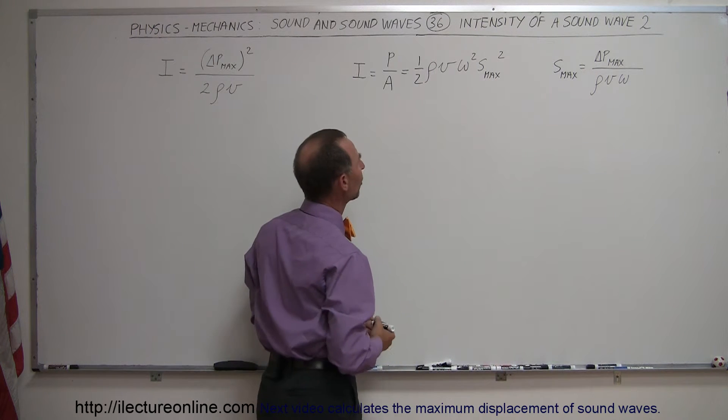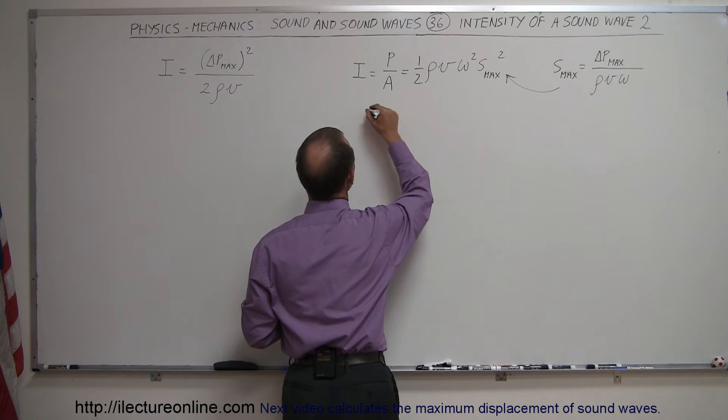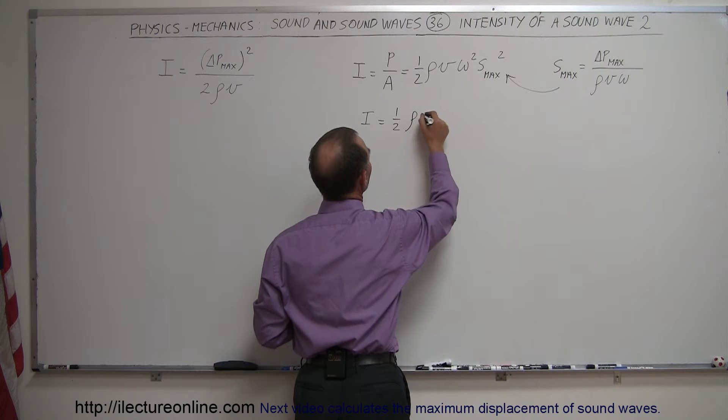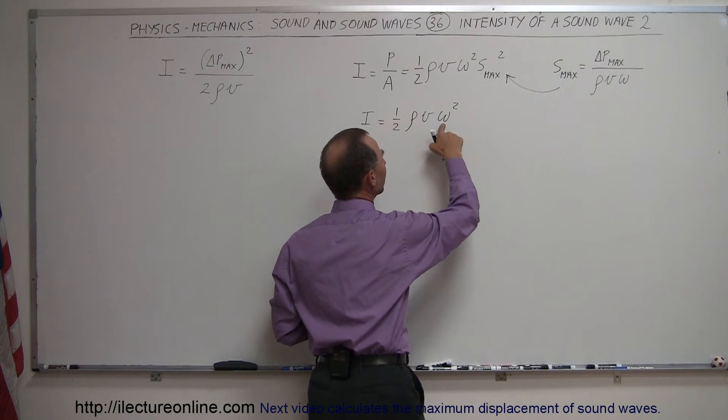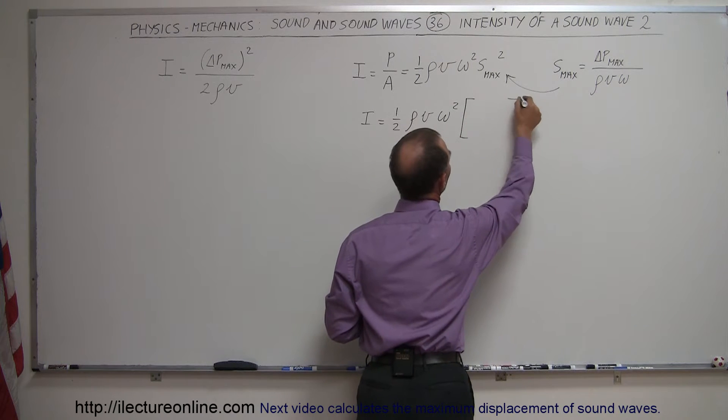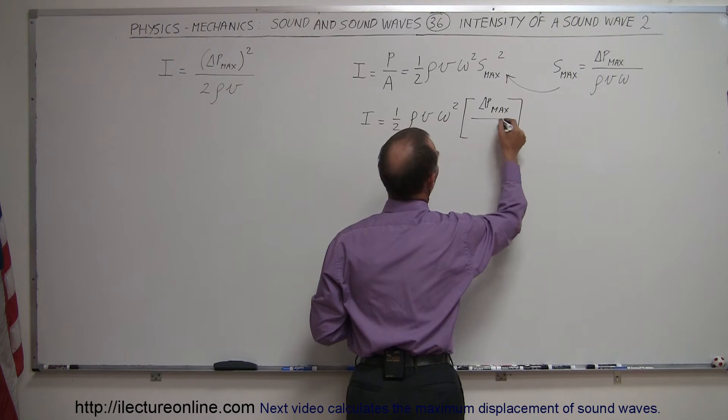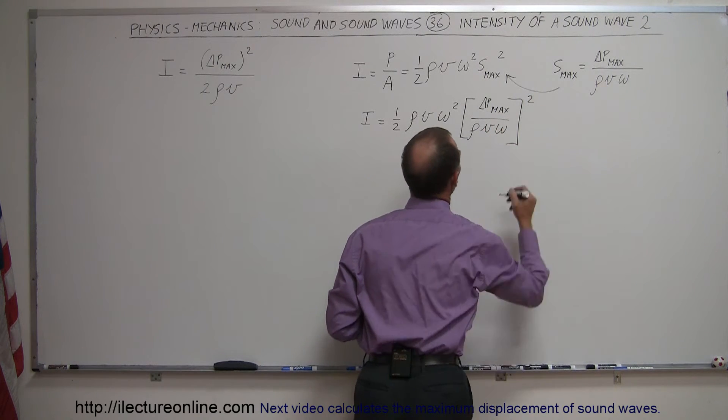We also had a relationship between the maximum displacement and the maximum pressure difference, and so if we plug this into here we then get that the intensity is equal to one-half times the density of air times velocity times the angle of frequency squared, and then we multiply that times this quantity right here which is delta pressure max divided by the density, velocity, and angle of frequency squared.